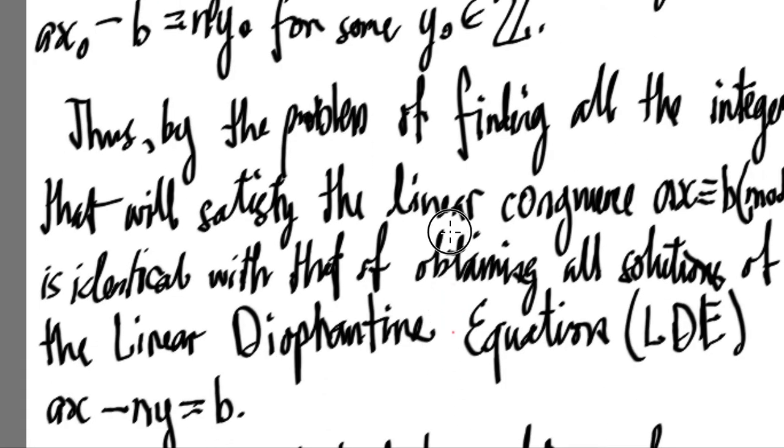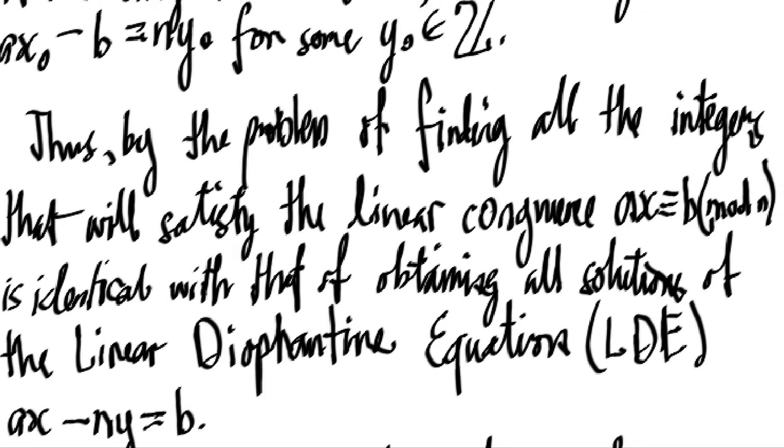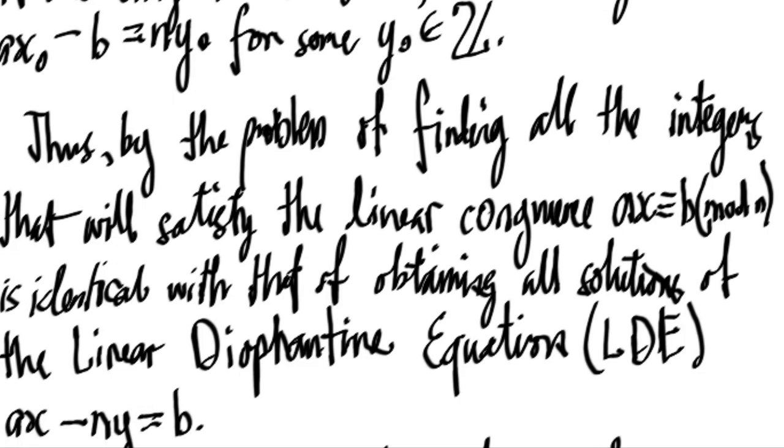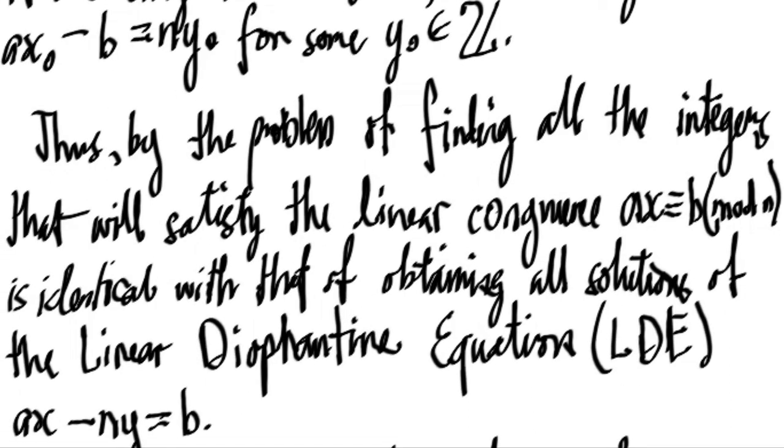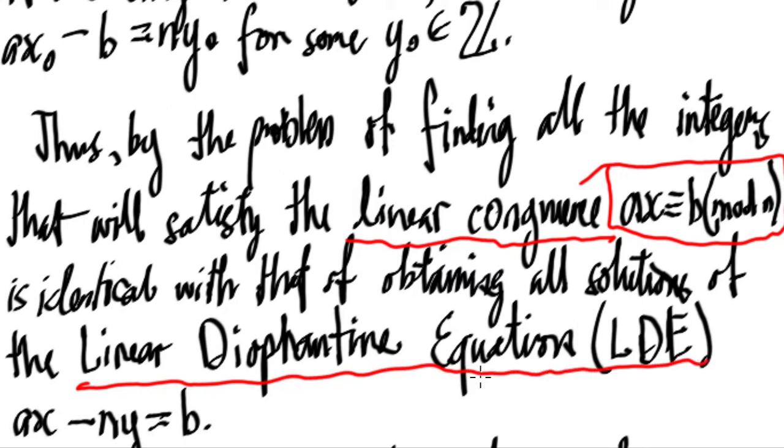Thus, the problem of finding all the integers that will satisfy the linear congruence ax is congruent to b mod n is identical with that of obtaining all solutions of the linear diophantine equation ax minus ny equals b.